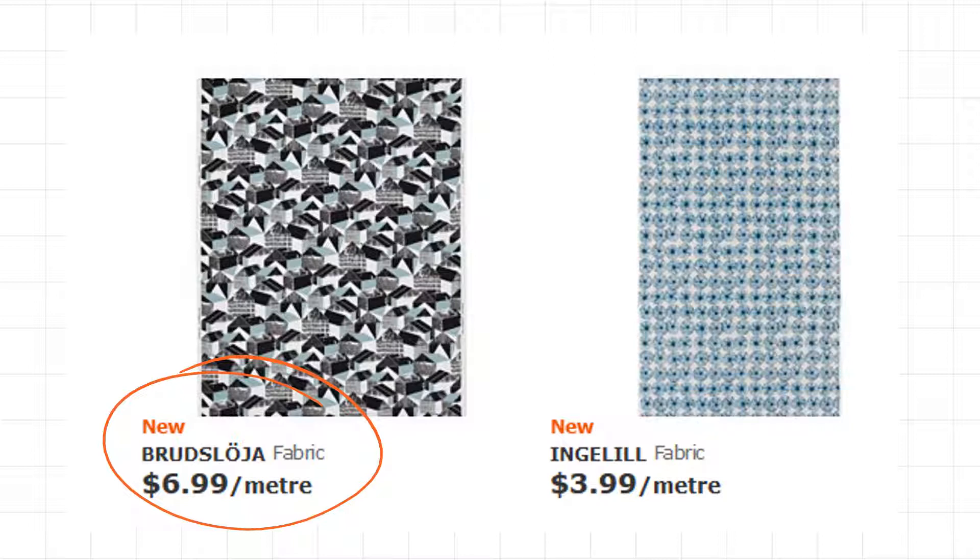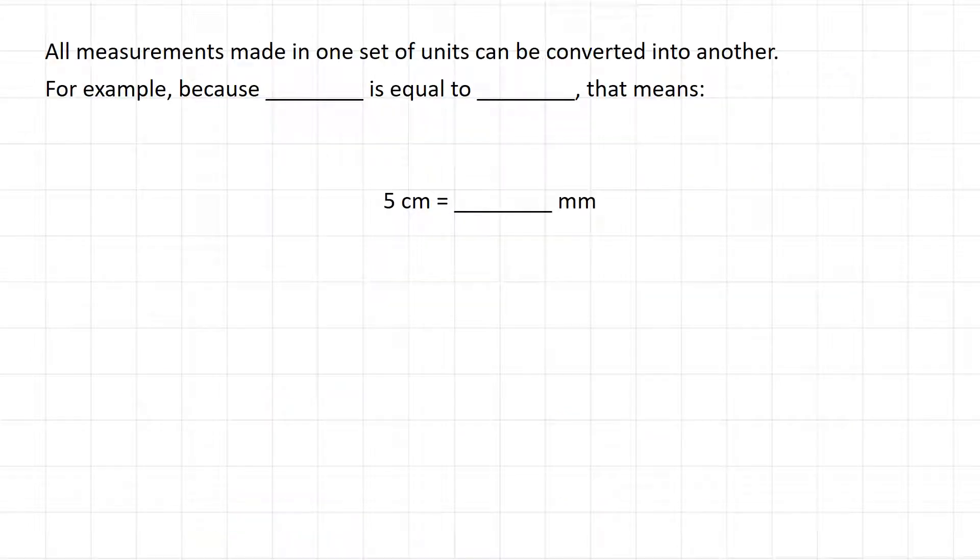All measurements made in one set of metric units can be converted into another. For example, because we know that 1 centimeter is equal to 10 millimeters, that means 5 centimeters must be equal to 50 millimeters.